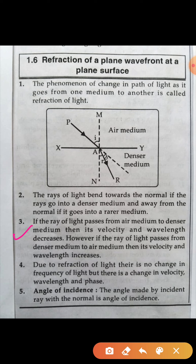If the ray of light passes from denser to rarer, then its velocity and wavelength increase. Due to refraction of light, there is no change in frequency of light, but there is a change in velocity, wavelength, and phase.